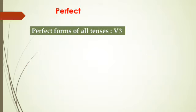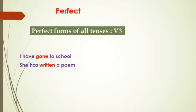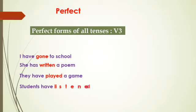Verb three (V3) in all tenses — present perfect, past perfect, or future perfect — remains the same and is called non-finite. 'I have gone to school' — 'gone' is non-finite. 'She has written a poem' — 'written' is verb three, non-finite. 'They have played a game' — 'played' is non-finite. 'Students have listened to teacher' — 'listened' is non-finite. Have, has, had are finite and change with subject. For example, 'They have played' becomes 'Ravi has played' — 'have' changes to 'has', but 'played' remains same. Gone, written, played, listened never change.